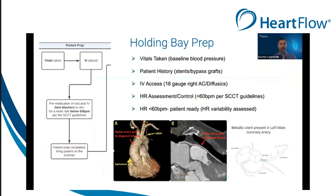Patient prep at the point of scheduling and while the patient is in the prep bay are critical. CT technologists should work closely with nursing and departmental management to achieve SCCT guidelines of heart rates less than 60 beats per minute. This will ensure proper protocol selection to reduce both radiation exposure and motion artifacts. We can't overlook details in patient history, as this helps with protocol selection, z-axis coverage, and ensuring the study satisfies the clinical indication. The images show examples of bypass grafts, surgical clips, and stents that create specific imaging scenarios.